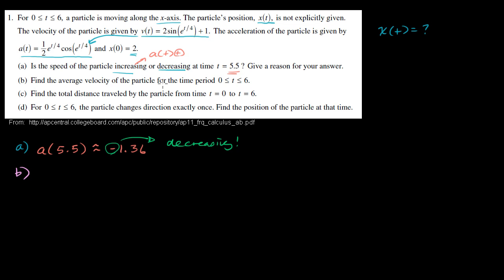Find the average velocity of the particle for the time period between time 0 and time 6. The easy way to think about average velocity is that distance is equal to average velocity times time, or your average velocity is equal to the distance you travel divided by time.